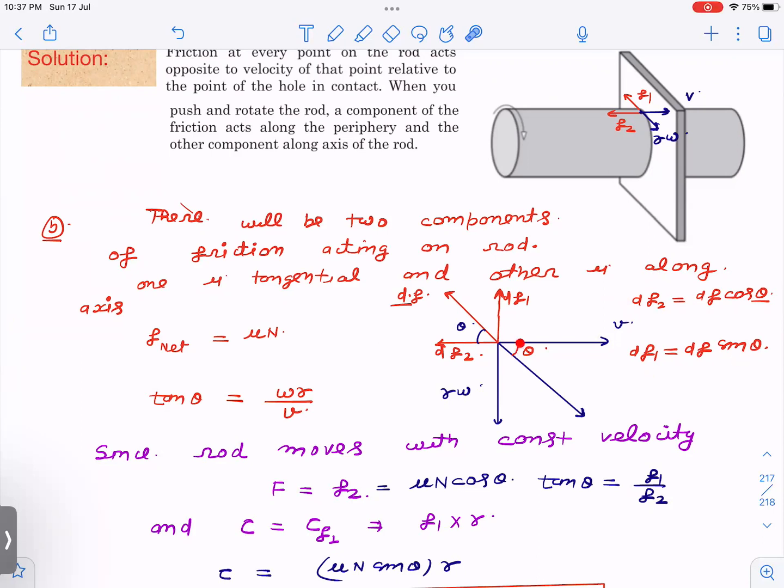Now I have assumed this angle as theta and net friction force is mu n. In this triangle, you can very easily see that tan theta equals r omega by v. Since the rod moves with constant velocity, the applied force has to be f2. f2 is this component which is in the axial direction. f2 is nothing but mu n cos theta because total f force is mu n. And tan theta equals, if you divide these two, after integrating tan theta equals f1 by f2. That's also very clear because the theta angle is constant at every point.